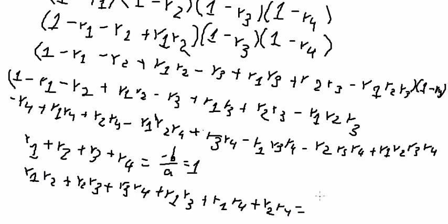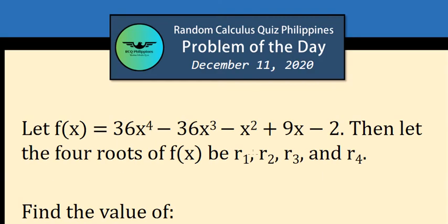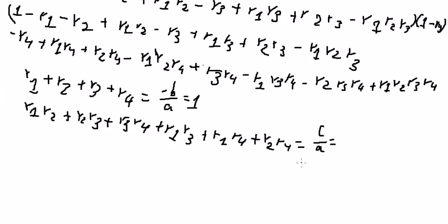This one, you got c over a. c is negative 1, divided by a. So you got negative 1 over 36.